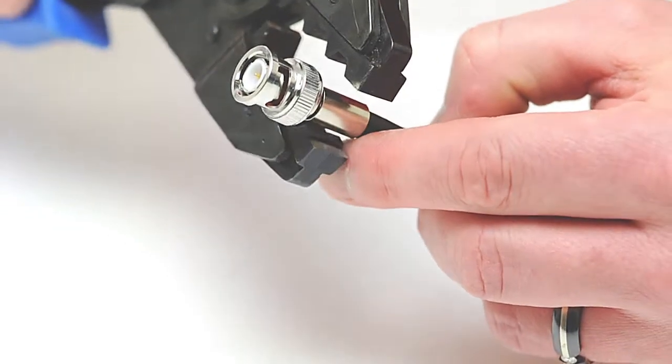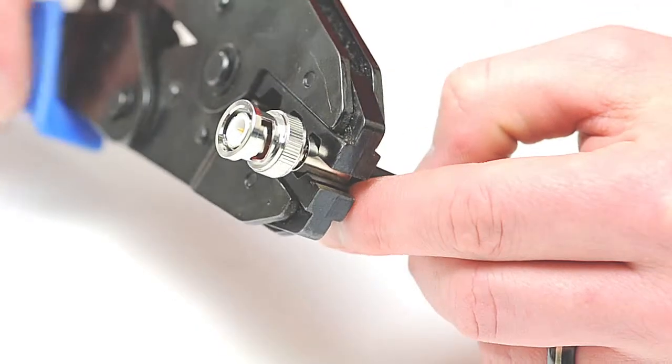Take your crimp tool and crimp the ferrule onto the jacket. This will create a secure connection.